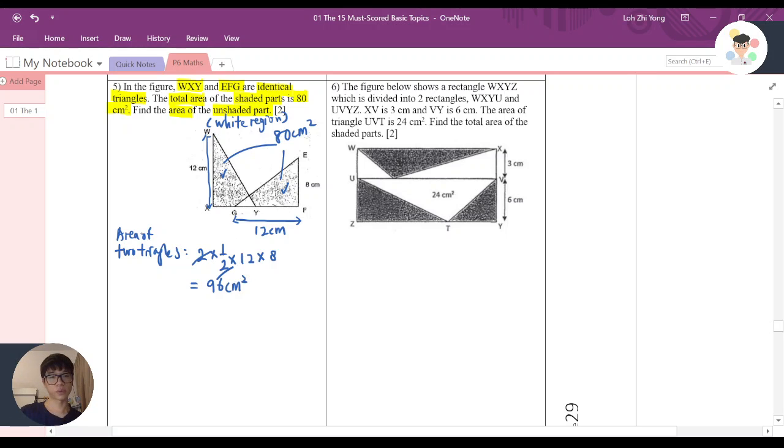However, the area of two triangles, if you want to be particular in writing it down, is actually the shaded region plus two white regions. Why? Because the two triangles are overlapping.